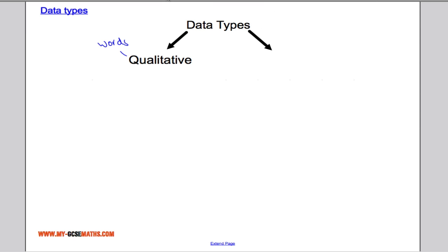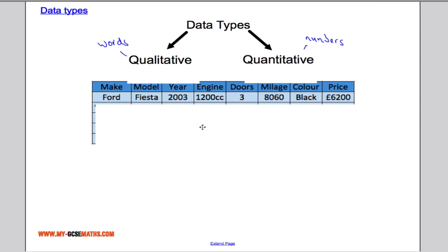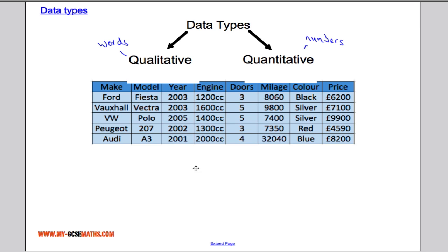Anything that involves numbers and quantities is what we call quantitative data. Now I've got a little table below which will show us different data and information about cars. So let's take a look and see if we can identify some qualitative data and quantitative data.